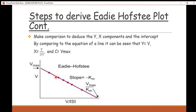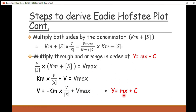Let's interpret this on a graph. The y-axis represents velocity v, and the x-axis represents v/[S]. By plotting v against v/[S] we get a straight line with a negative slope. This is different from the Lineweaver-Burk plot, which has a positive slope. The slope of this line equals negative K_m.